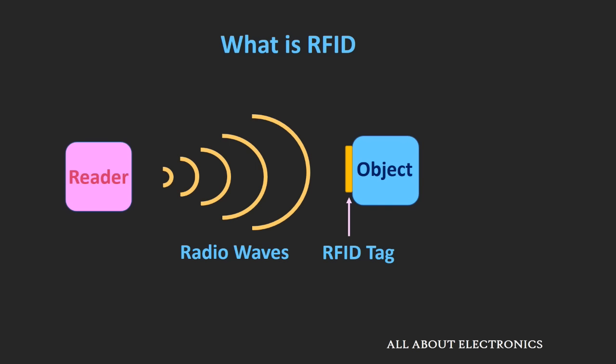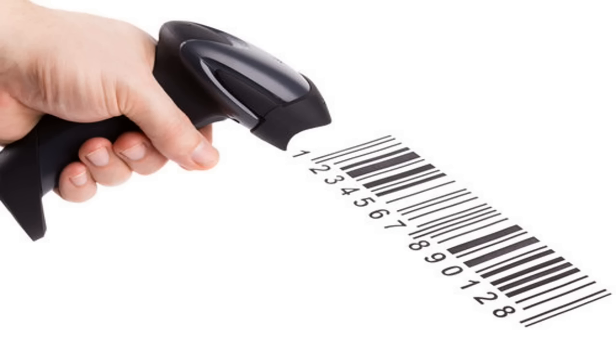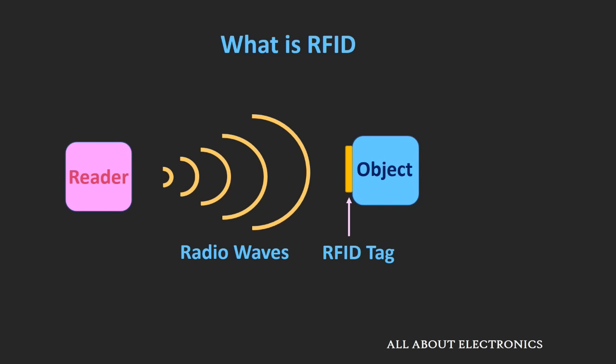In this RFID technology, an RFID tag is attached to the object we want to track. The RFID reader continuously sends radio waves, and whenever the object is in the range of the reader, the RFID tag transmits its feedback signal back to the reader. This is very similar to barcode technology, but unlike barcodes, RFID is not a line-of-sight technology. As long as the object is within the range of the reader, it can send the feedback signal back. Using RFID, we can even track multiple objects at the same time.